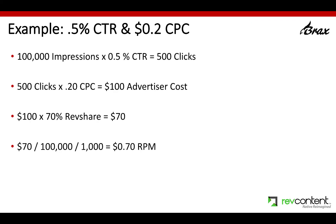I'm going to give you a couple of examples so you understand the CPC-CTR relationship. In the first example, you have a 0.5% CTR and a 20 cent bid. If you have 100,000 impressions on a publisher, that gives you 500 clicks. 500 clicks times 20 cents is $100. Now there's a revenue share — let's say it's 70%. That means the publisher makes $70 and RevContent keeps $30. The publisher then does an RPM calculation: they take that $70, divide it by 100,000 impressions, then divide by 1,000 to make it per thousand, which gives them a $0.70 RPM.